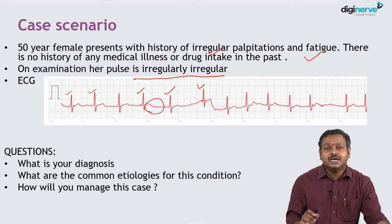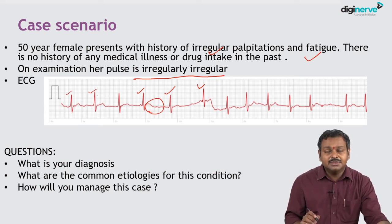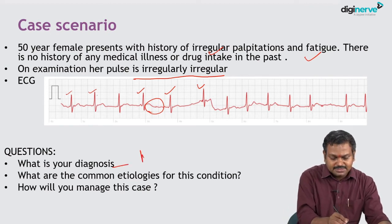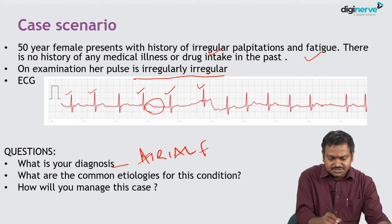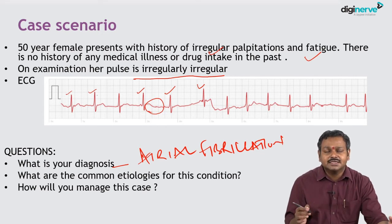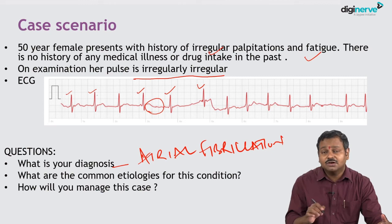The questions that may be asked in your theory paper are: what is the diagnosis, what are the common etiologies for this condition, and how do you manage? The diagnosis is atrial fibrillation. The etiologies and management will be discussed in the subsequent slides.